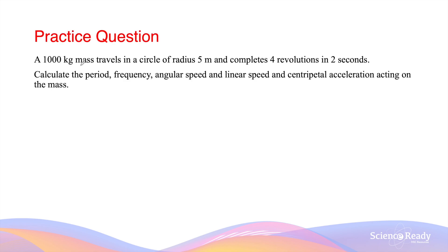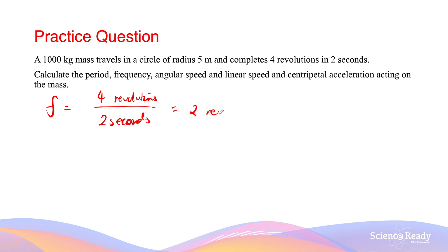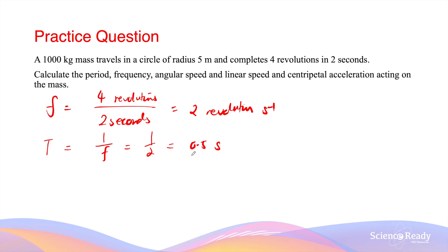A 1000 kg mass travels a circle of radius 5 m and completes 4 revolutions in 2 seconds. Calculate the period, frequency, angular speed, linear speed, and centripetal acceleration. Frequency is the number of revolutions per second: 4 revolutions divided by 2 seconds gives 2 revolutions per second. In every 1 second the object completes 2 revolutions. The period is 1 over frequency, so 1 over 2, which gives 0.5 seconds — the object takes exactly half a second to complete one revolution.